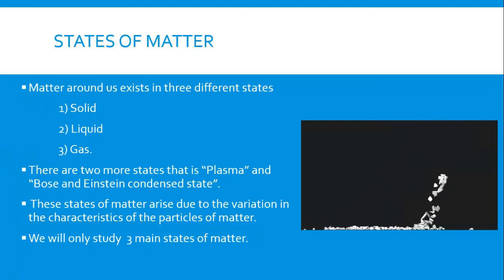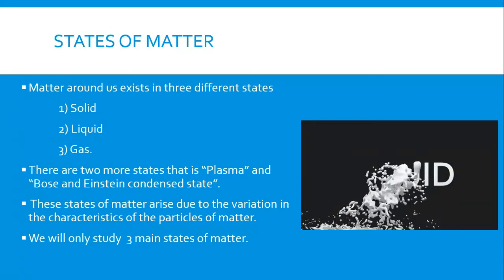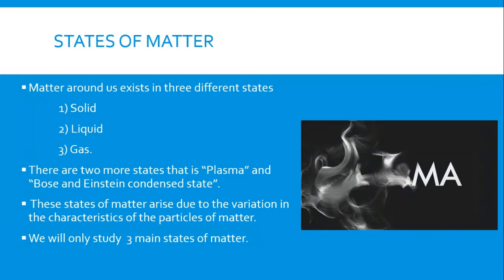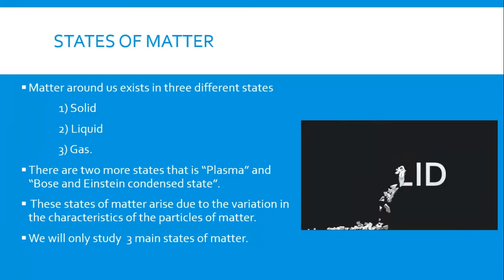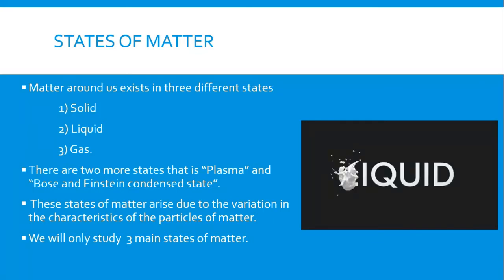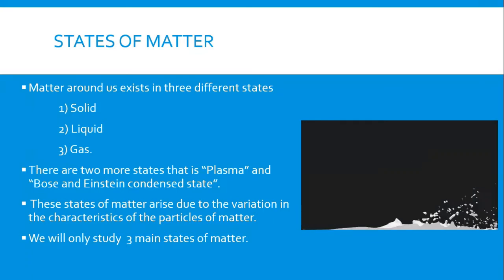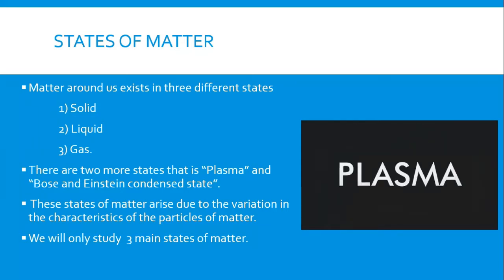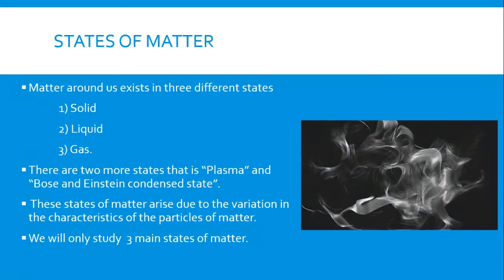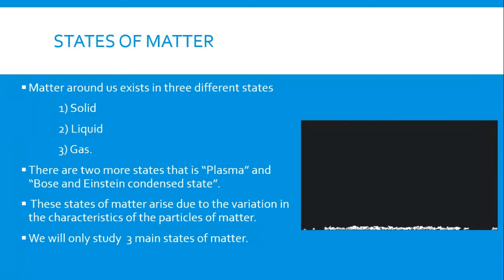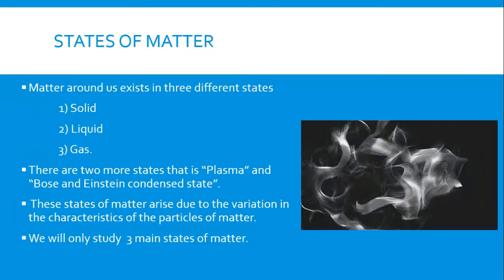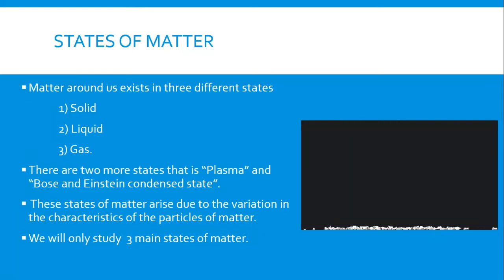Why are there different states of matter? Why is there not a single state? It is because of the characteristics of particles. Solid things like a bat or ball have different characteristics. Liquids like water and juice have different characteristics. Gases like oxygen, nitrogen, and hydrogen also have different characteristics. In this video we will study the three main states: solid, liquid, and gaseous.